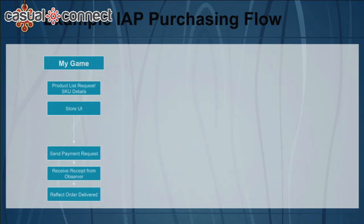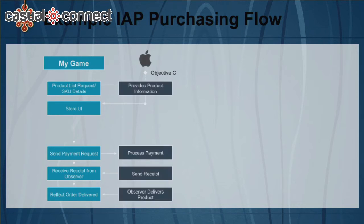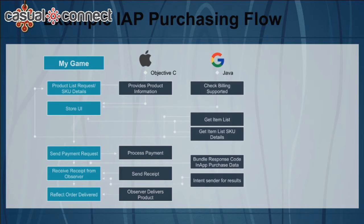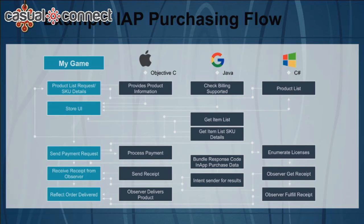Traditionally, here's an example of how you would build IAP yourself as a game developer. First, you build your game, decide which products you want to sell, and build a store UI. If you want to build for Apple, you read through all their documentation and figure out all the processes to get IAP working. Then if you develop for Google Play, it's a whole other set of code and documentation you have to wade through. And if you add another platform on top of that, it starts to look, frankly, like a mess.